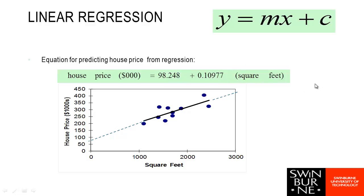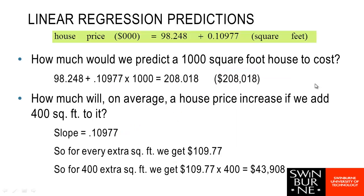Here's a couple of examples using the equation. If I wanted to predict the cost of a 1,000 square foot house, I plug 1,000 into my equation: 98.248 plus 0.10977 times 1,000, which gives us 208.018. We need to remember that was in thousands of dollars, so my predicted house price is $208,018.